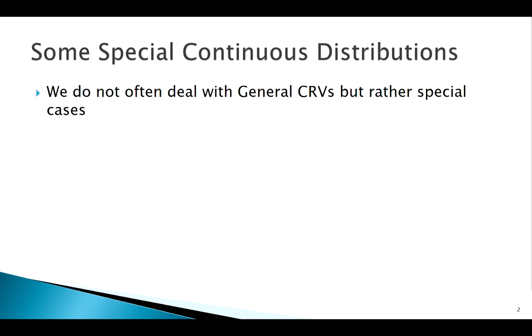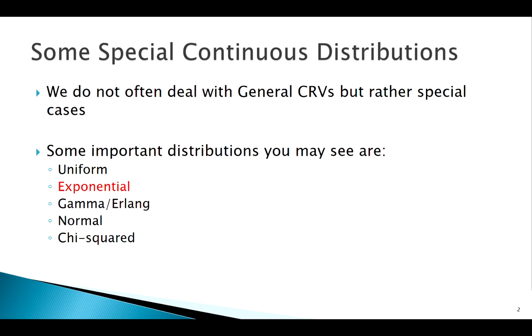But really we don't work with just general continuous random variables very often because with some unknown general situation, the density curve could be ugly, could be unknown. So usually when working with continuous random variables, we are working with special cases such as the uniform, which we've already seen.